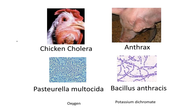He did this through the study of two animal diseases, not human diseases. The first disease is chicken cholera, obviously in chickens, and the second disease is anthrax, which is a disease common in cows, sheep, and pigs on farms. Each of the diseases is caused by a bacterium: Pasteurella multocida is the one causing chicken cholera, and Bacillus anthracis is the one causing anthrax.